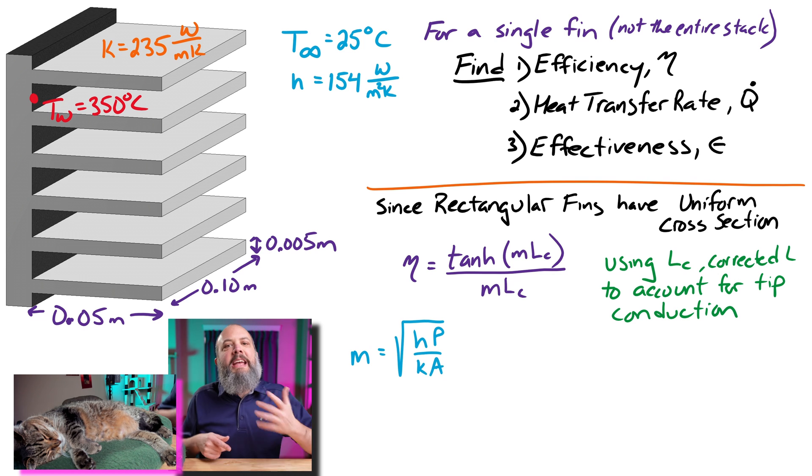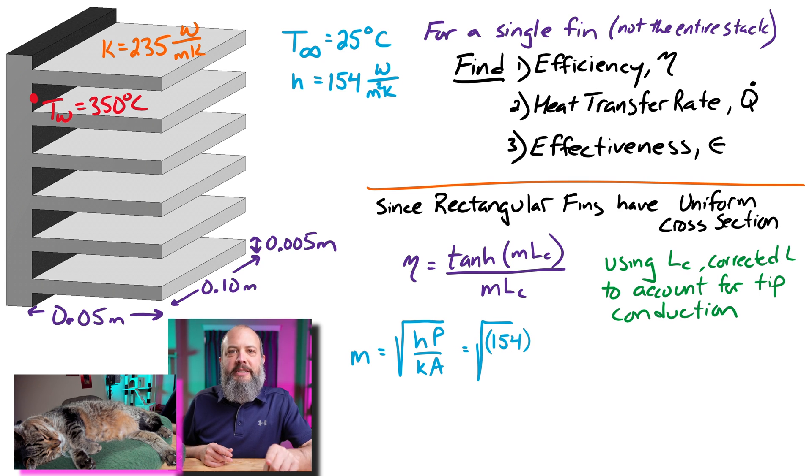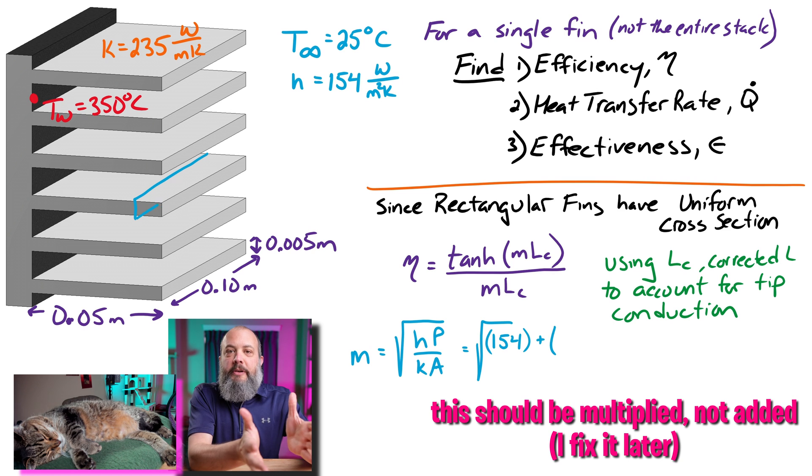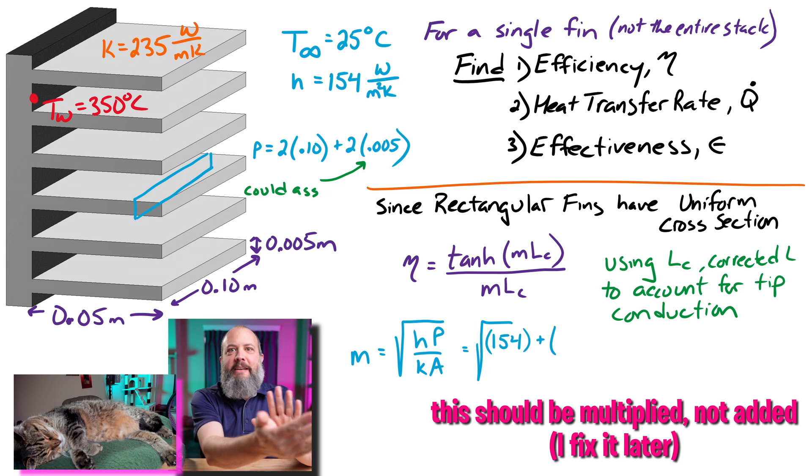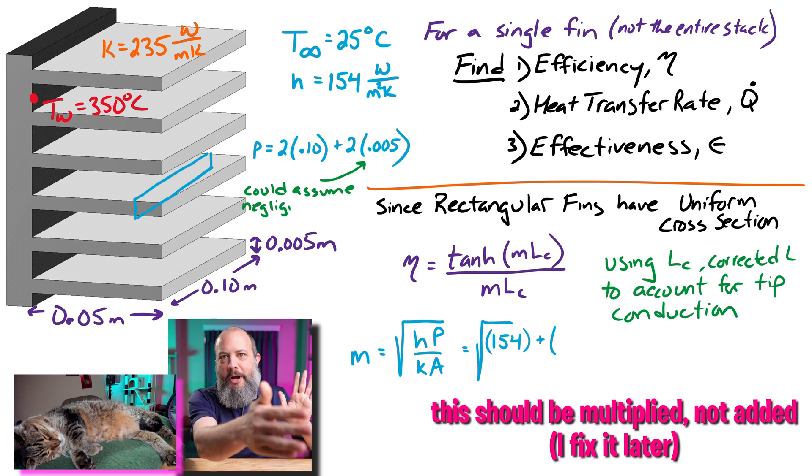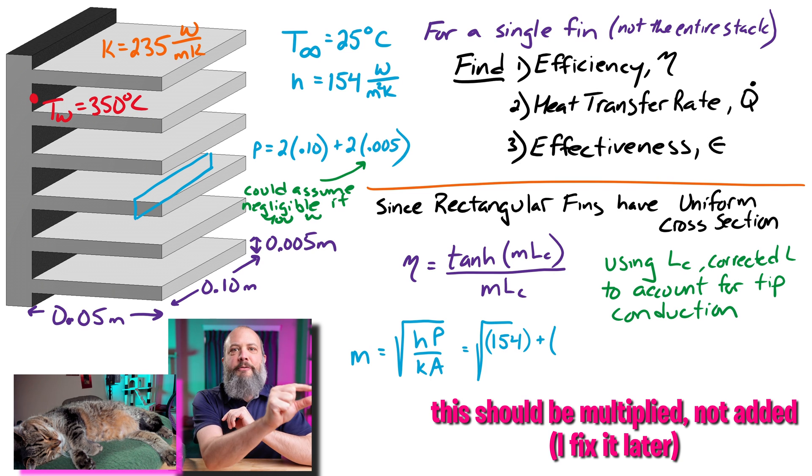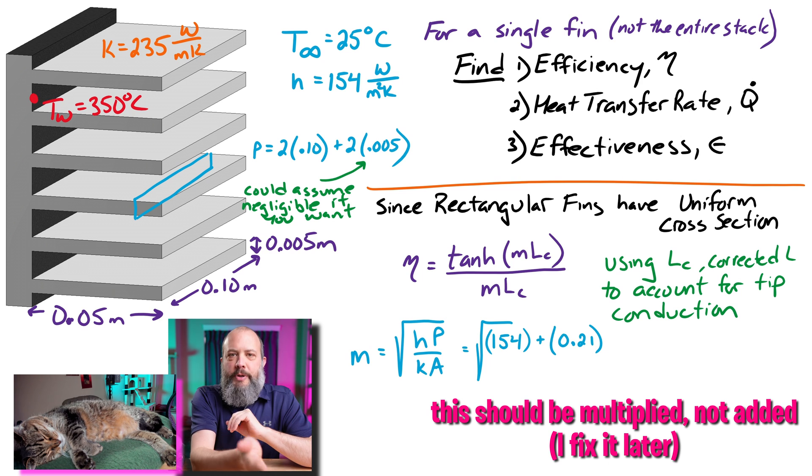So square root of HP over KA for M, we were given the value of H, 154 watts per meter squared Kelvin. And now I need the perimeter. So the perimeter is just the rectangle, the two top sides and the two side sides. And so the perimeter is just all of the lengths as you go around the fin, top, bottom, left and right. So my 0.1 meters in length, my 0.05 meters in height, and I get 0.21 meters as a total perimeter.